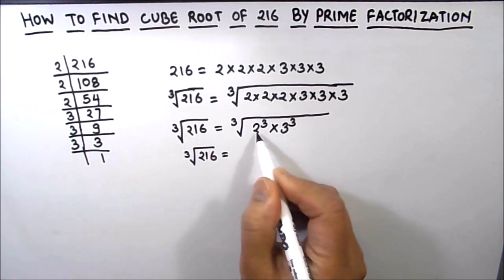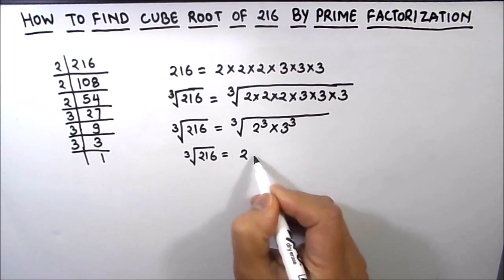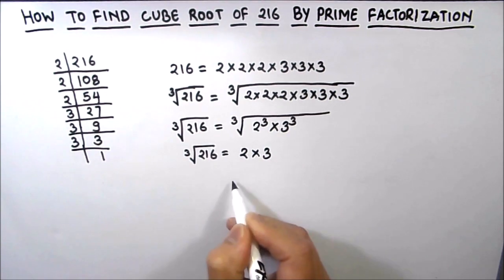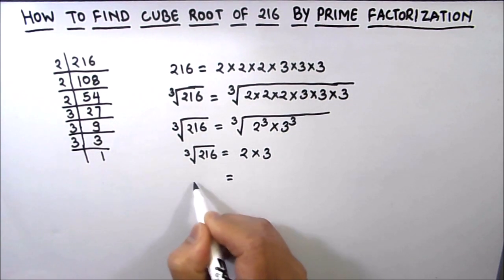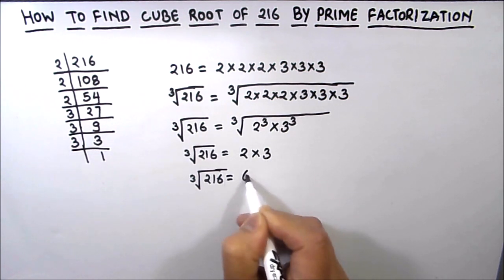So the cube root of 2 cubed is 2, and cube root of 3 cubed is 3. So the cube root of 216 is 2 times 3, which is equal to 6.